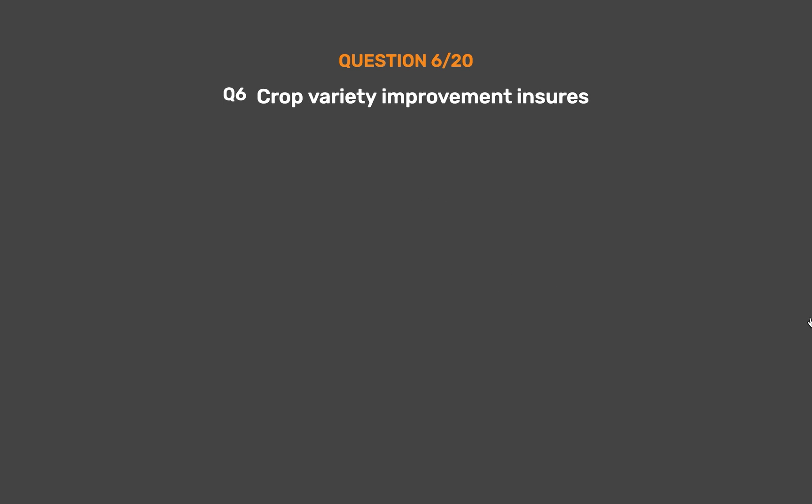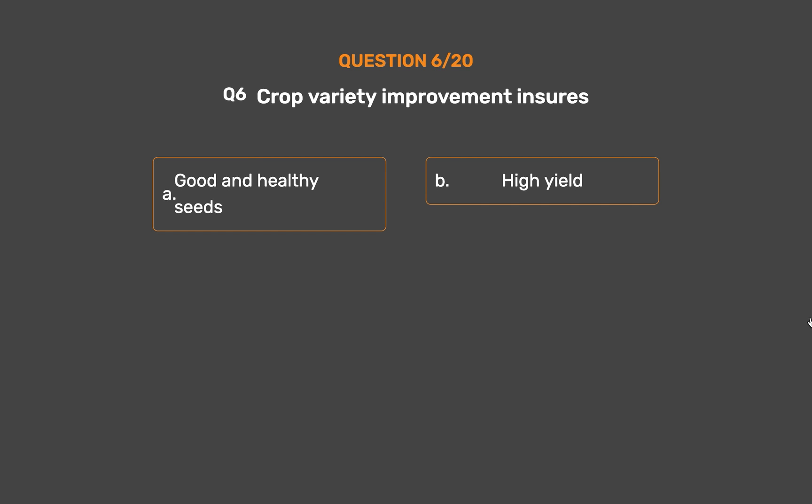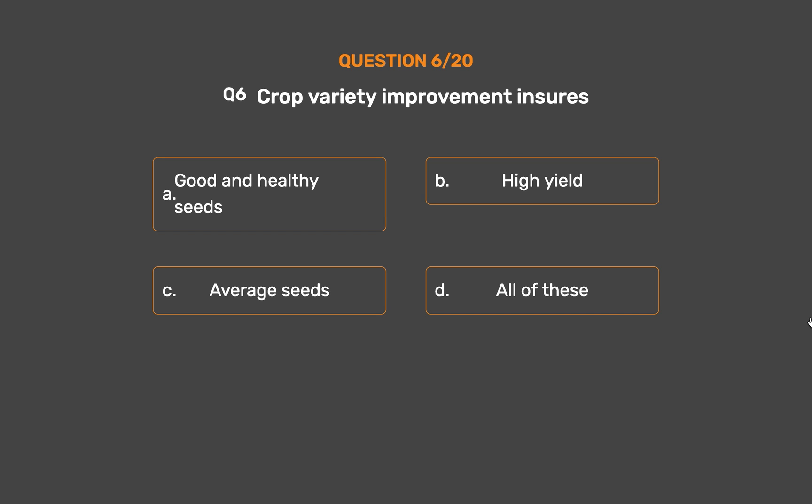Question No. 6. Crop variety improvement ensures — Option A: Good and healthy seeds. Option B: High yield. Option C: Average seeds. Option D: All of these.